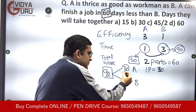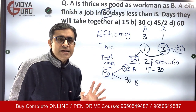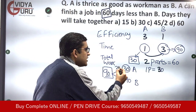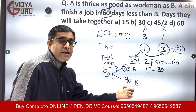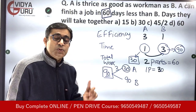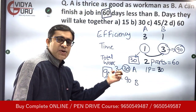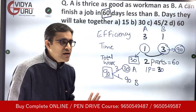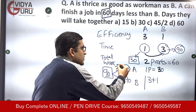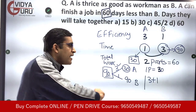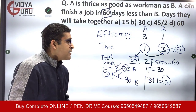In one day: if the total work is 90 units and A completes it alone in 30 days, then A does 3 units of work per day. B takes 90 days to complete 90 units, so B does 1 unit of work per day. Per day: A does 3 units, B does 1 unit. If they work together, in one day they perform 3 plus 1 equals 4 units of work.